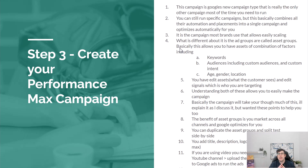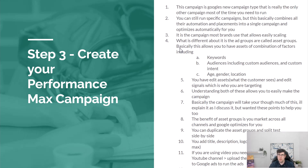Performance Max is the campaign most brands use for easy scaling. It has ad groups called 'asset groups' — the reason they use that term is because an asset group contains images, videos, text, and all formats, including shopping. It also combines your audience signals within that asset group — basically who you target. Key things to know: keywords, audiences including custom audiences, custom intent, in-market audiences, plus demographics like age, gender, and location.